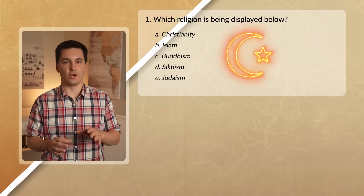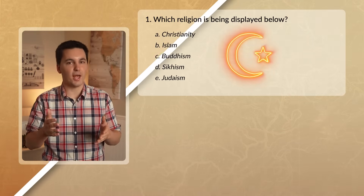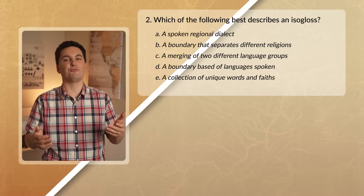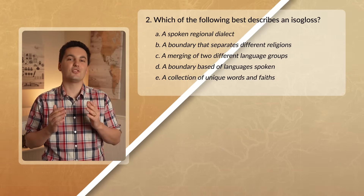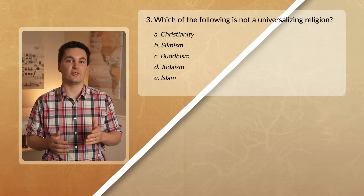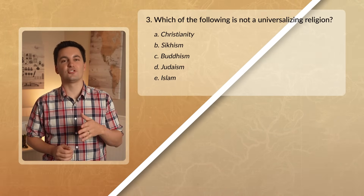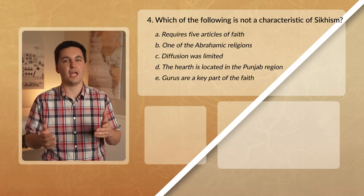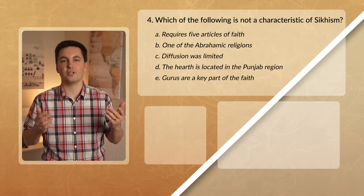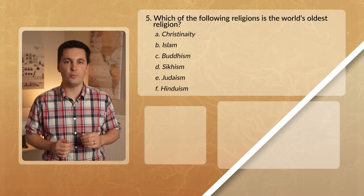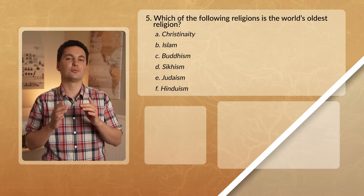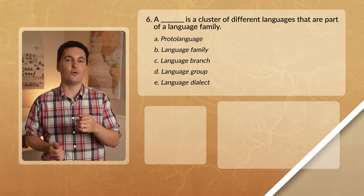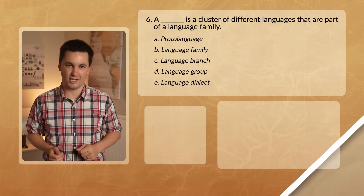Alright, so that was just a really quick look at language and religion and how they diffuse and influence different places. Now comes the time to practice. Answer the questions on the screen. And don't forget, if you need more help with your AP Human Geography class, check out my Ultimate Review Packet and subscribe. As always, I'm Mr. Sin, and I'll see you next time online.